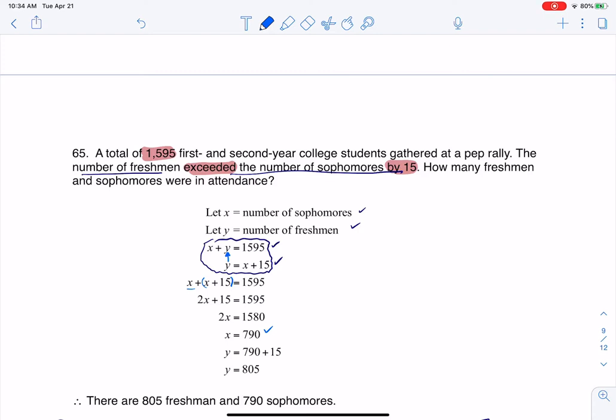If I want to get my y value, let's just plug it right back in here. Add 15 to it, and y is 805. At the end of this, we get to say there were 805 freshmen and 790 sophomores.